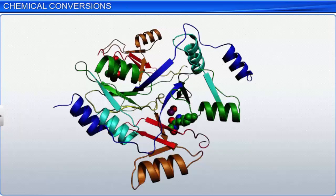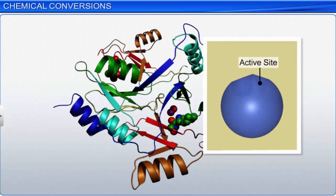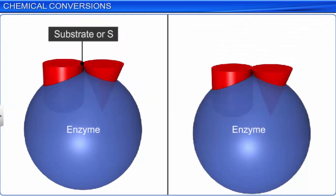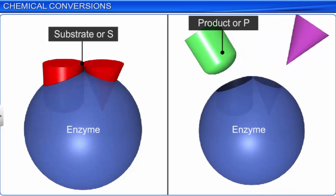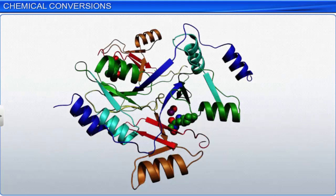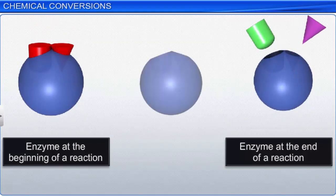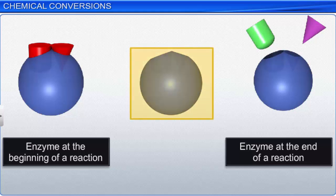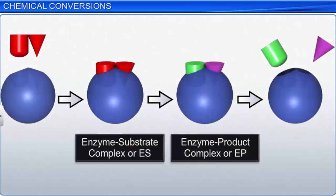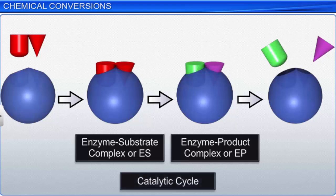Enzymes are three-dimensional protein structures with an active site. They convert a substrate S into a product P. One or more products can be formed from a single or many substrates. Enzymes help in catalyzing the reactions, but they do not participate in the reaction themselves. At the end of any reaction, the enzyme remains unaltered and is ready to be used by another molecule. The multi-step reaction mechanism involving enzymes as catalysts is called the catalytic cycle.